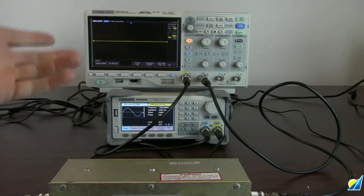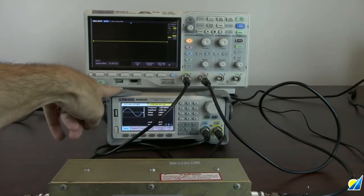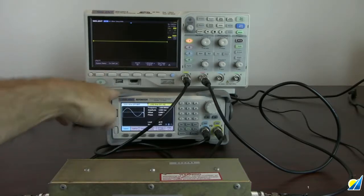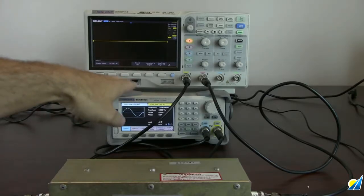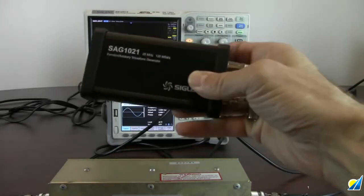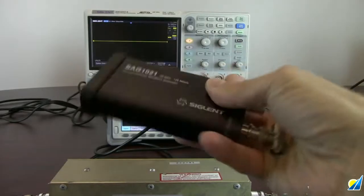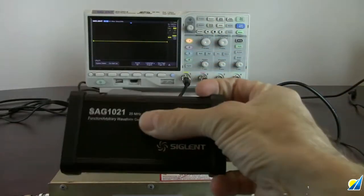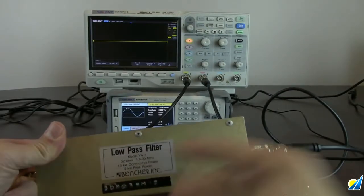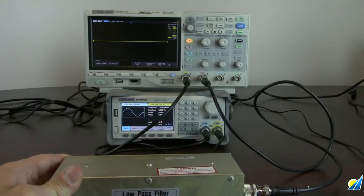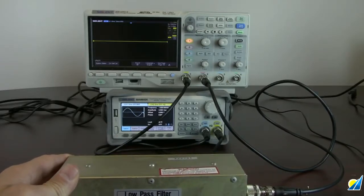We're also going to be using a generator. In this case we're using one of our SDG 6000X series. This particular technique works with an SDG 1X, 2X or 6X family of products that gets you from 30 megahertz with the SDG 1032X all the way up to 500 megahertz with the SDG 6052X which is what we have here. This test can also be run using the standalone SAG 1021, an accessory for the four channel XE. This goes up to 25 megahertz. The reason I'm not using it for this particular test is this is a 30 megahertz filter so we need to go beyond 30 megahertz in order to see the filter effect.